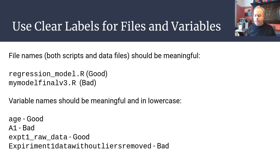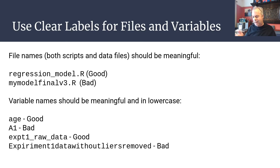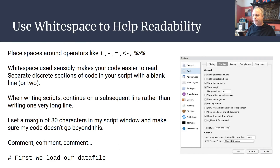Variable names should be meaningful, and I think it always makes things more readable to keep them in lower case. For example, if you've recorded participants' age, just calling it 'age' in lower case is obviously meaningful. Variable names like 'a1' are bad — they don't tell you anything. For a data file, 'experiment1_raw_data' is a good name because it tells you exactly what it is, whereas something like 'experiment1dataWithoutOutliersRemoved' with no underscores is a bad name, and you'll get annoyed typing it repeatedly.